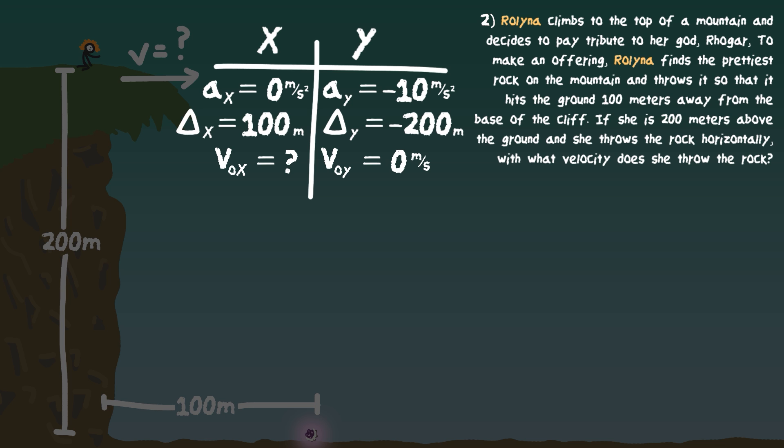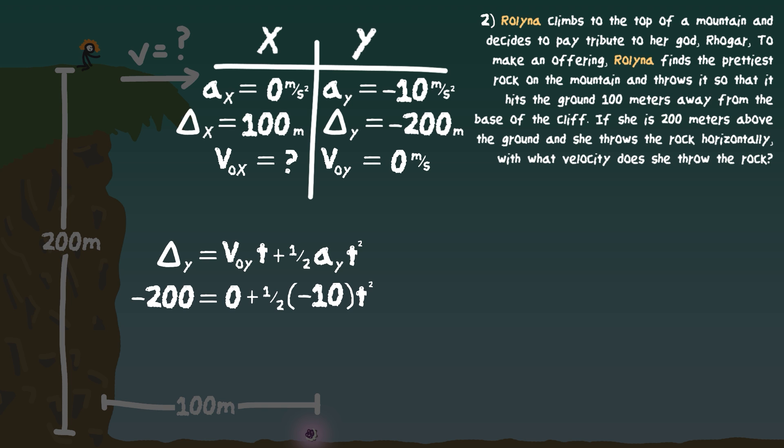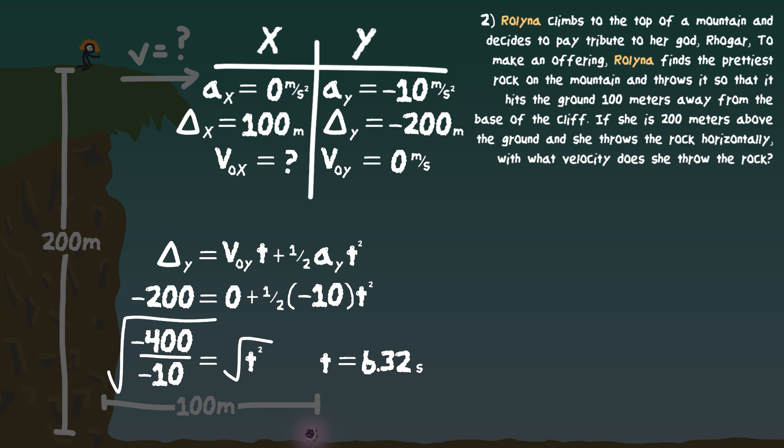The only thing shared between X and Y is time, so we use the Y information to find time first. Using displacement Y equals V-initial-Y times T plus one-half times A-Y times T-squared: negative 200 equals zero plus one-half times negative 10 times T-squared. Rearranging: negative 400 divided by negative 10 equals T-squared. Taking the square root gives T equals 6.32 seconds.